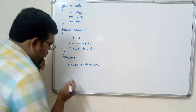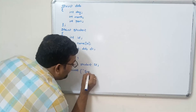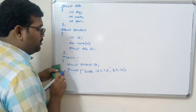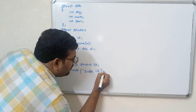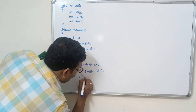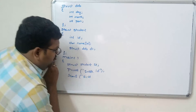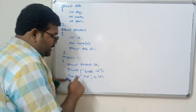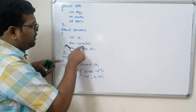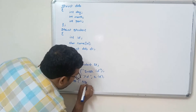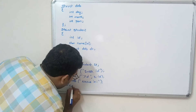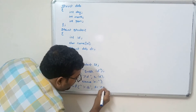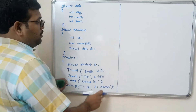For reading values, we write the scanf function. To read the id: `printf("Enter ID:")` then `scanf("%d", &s1.id)`. To read the name: `printf("Enter name:")` then `scanf("%s", s1.name)`. To access the date of birth members we use `s1.d1.day`.